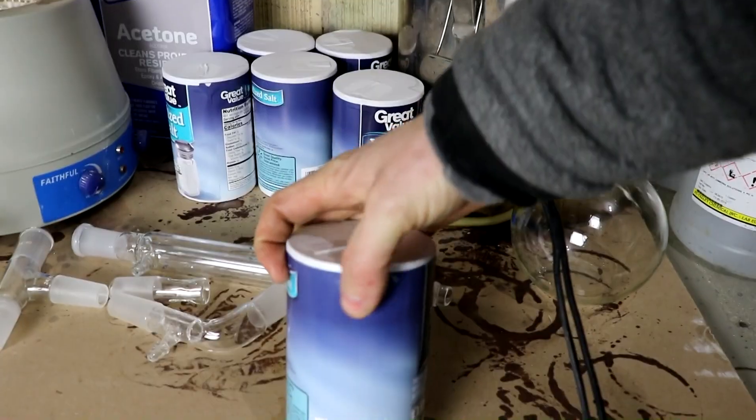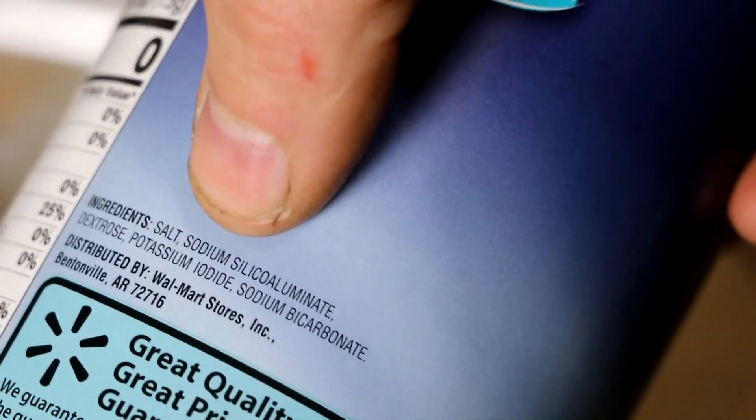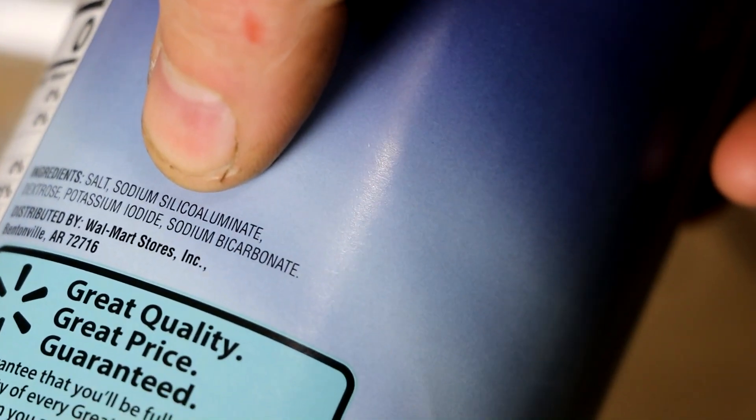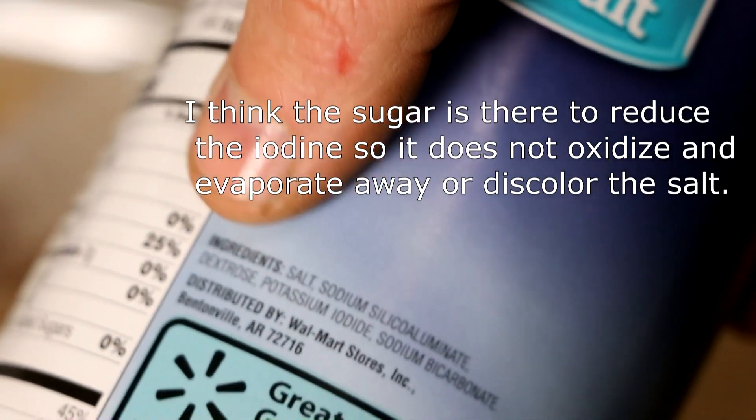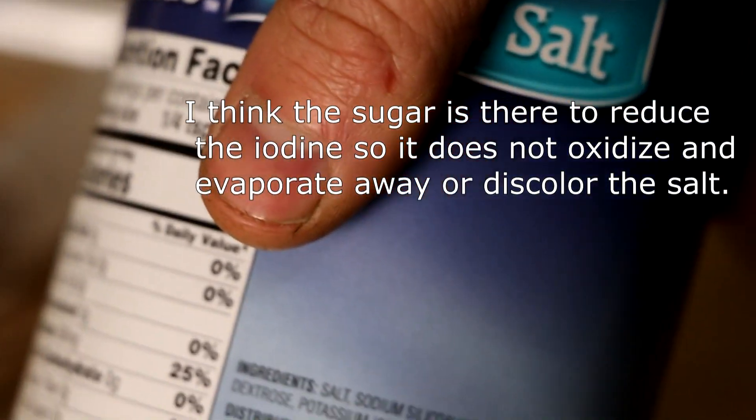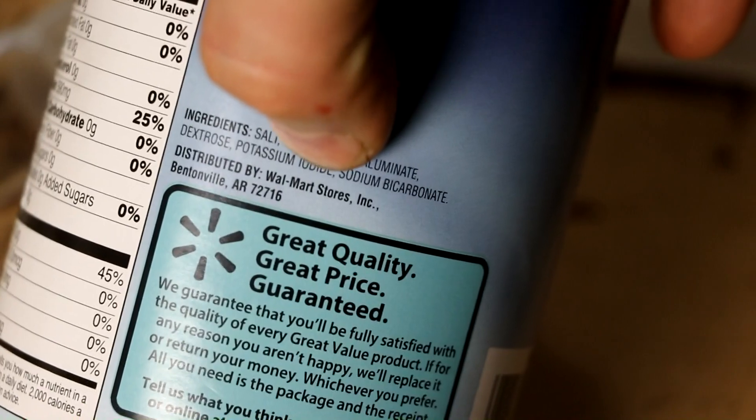Let's have a look at the label real quick. Zoom in here so it has salt, obviously this is a can of salt. Sodium silicoaluminate, so that's your anti-caking agent. Dextrose, a little bit of sugar in there, that's interesting. Potassium iodide, that's the stuff we want to get out.